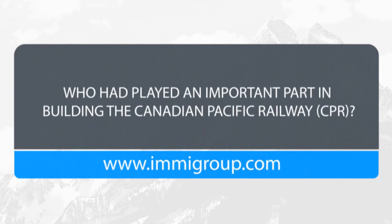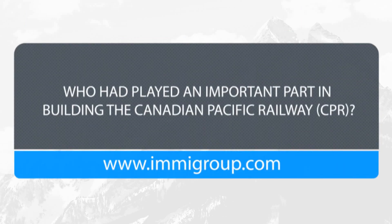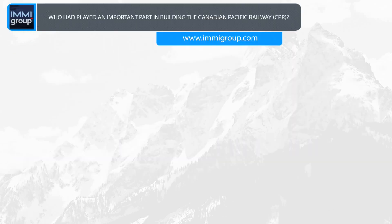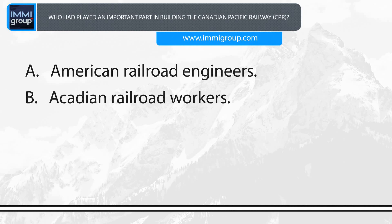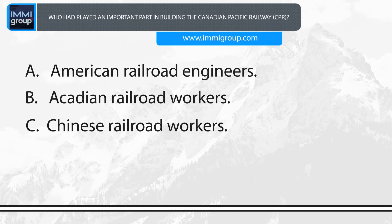Who played an important part in building the Canadian Pacific Railway? A. American Railroad Engineers. B. Arcadian Railroad Workers. C. Chinese Railroad Workers. D. Afro American slaves.